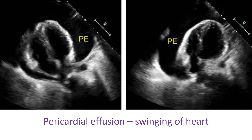The pigtail catheter is commonly used for draining a pericardial effusion. Catheters with the same shape are also used for drainage of pleural effusion, pneumothorax, and ascites, but they are usually of bigger diameter and shorter in length. Similar catheters are used for nephrostomy as well.